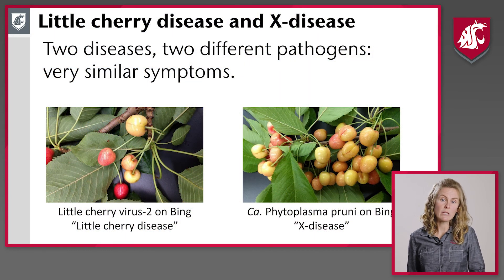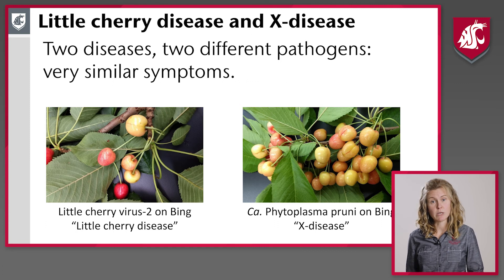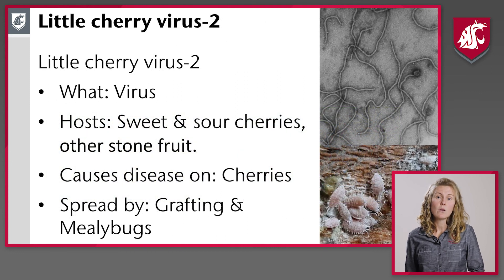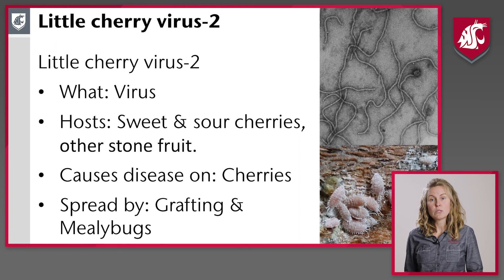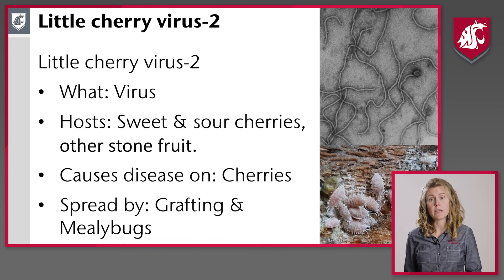What's a little confusing is we have two diseases caused by two pathogens, but they cause very similar symptoms, which we conventionally call Little Cherry. We have Little Cherry Virus 2, which is a virus. It's going to be hosted by both sweet and sour cherries and other stone fruit, but only show symptoms in cherries. It's moved around by grafting as well as insect vectors — the insect vector for Little Cherry Virus is mealybugs, both apple and grape mealybug.